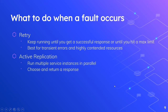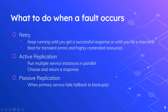A second strategy would be active replication — you have multiple instances of the service running in parallel, they all give you an output, and from there you can choose which output to pick and send back to the client. The last general strategy is passive replication: you have your primary server, if it fails it falls back to a backup, and your backups could have backups. These operate in sequence as opposed to in parallel.